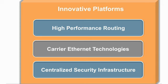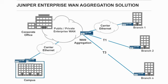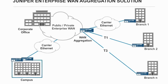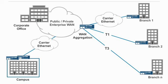The solution provides resiliency, improved application performance and operational efficiency while reducing network complexity at the WAN edge and aggregation. The high-performance routing component includes carrier Ethernet technologies such as Multi-Protocol Label Switching (MPLS) and Virtual Private Networks (VPNs) for inter-campus or branch communication.